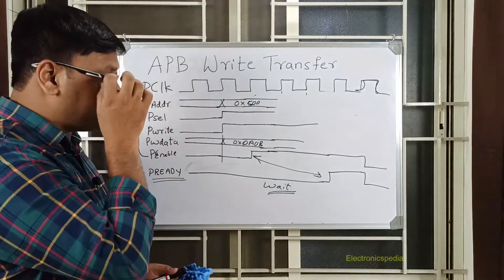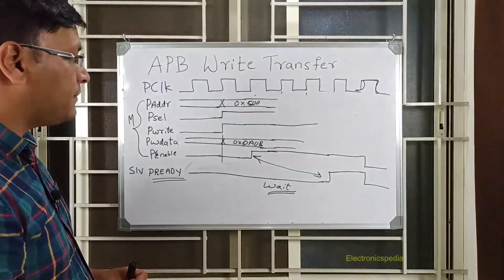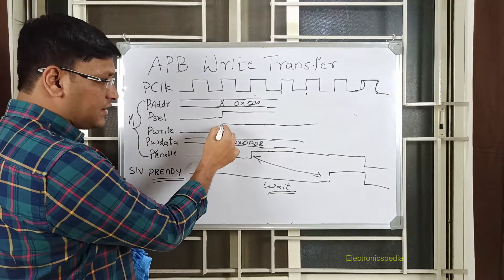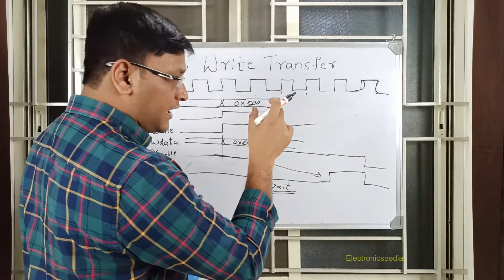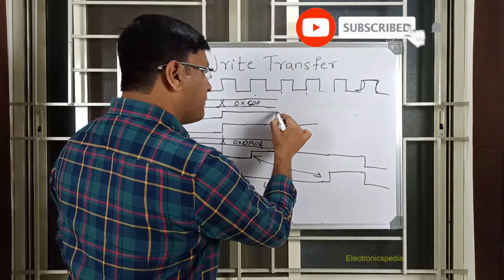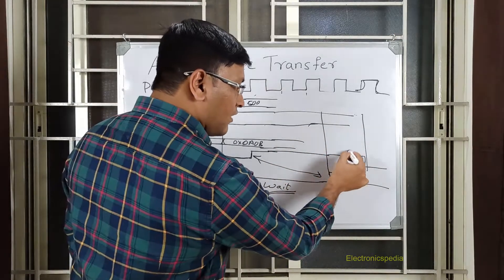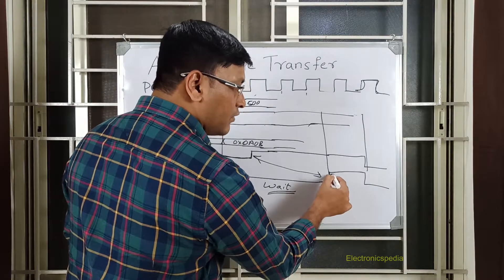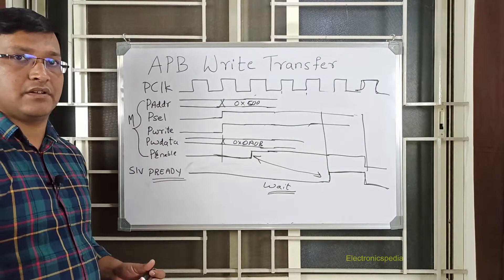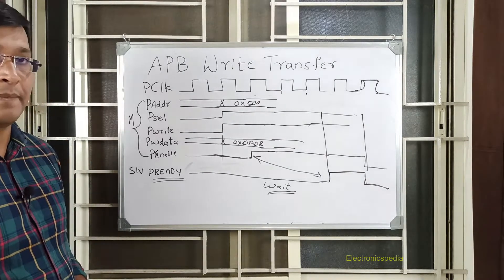I hope this concept is pretty simple. What you should understand is: when PSEL is asserted, the next clock cycle PENABLE should come. The transaction is valid and accepted only when PSEL, PWRITE, and PENABLE are all high — only then is it a valid transaction. This is all about the APB write transfer. In my next video I will explain about the APB read transfer along with waveforms. Thank you.